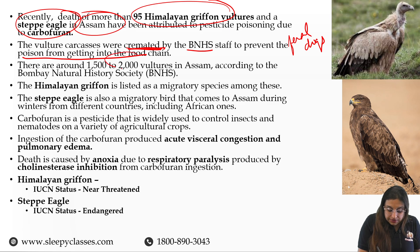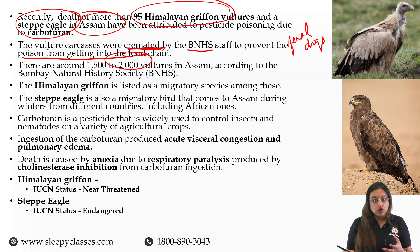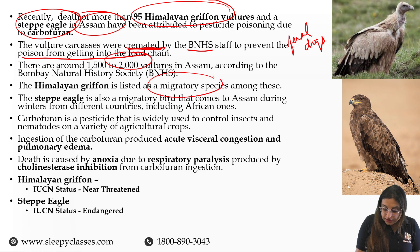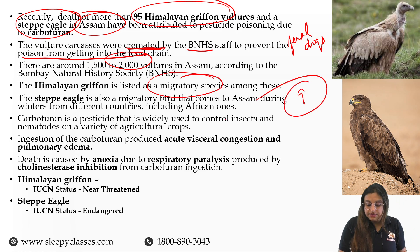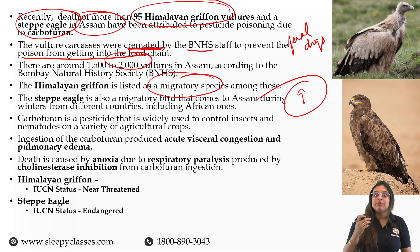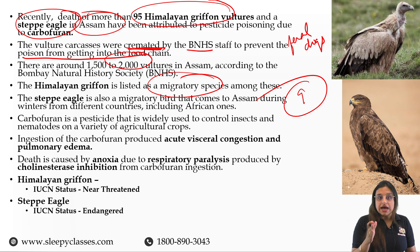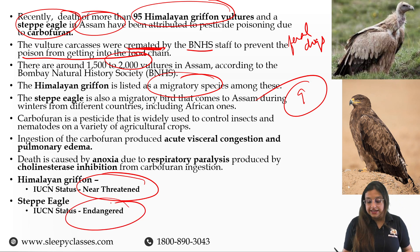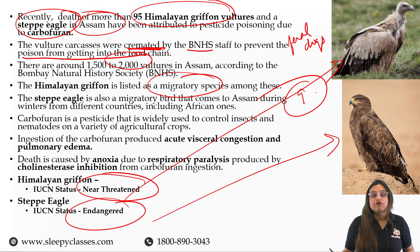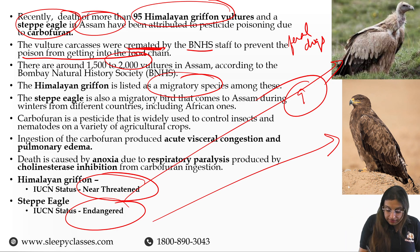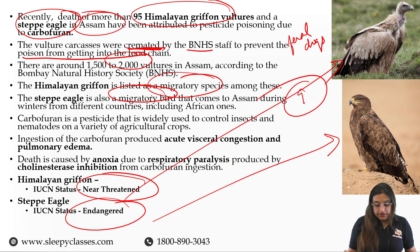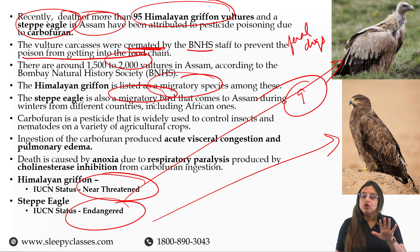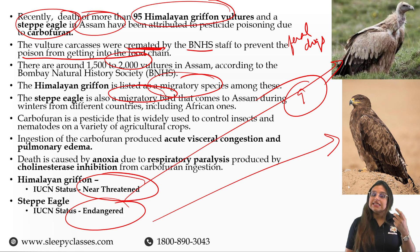In Assam, there are close to 2000 vultures and the Himalayan Griffon is one of them, listed as a migratory species. In India, there are 9 species of vultures, of which 4 are critically endangered, but the Himalayan Griffon's status is not threatened. The Steppe Eagle's IUCN status is endangered. The Steppe Eagle is also a migratory bird that comes during winter from different countries, including African ones.